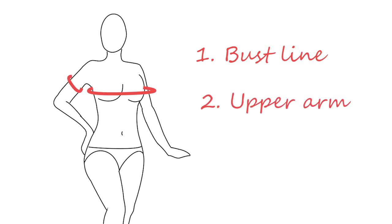First, take three measurements: your bust line, which is the largest part of your chest, your upper arm circumference, and your arm length, which is from your shoulder to your wrist.